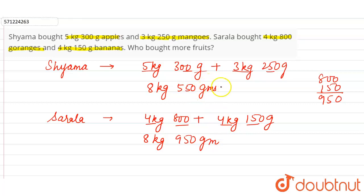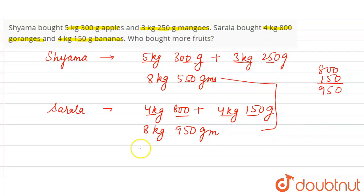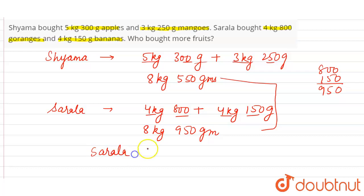Comparing the two: 8 kg 550 grams is less than 8 kg 950 grams. So we can say that Sarla has bought more fruits than Shama. This is the required answer.